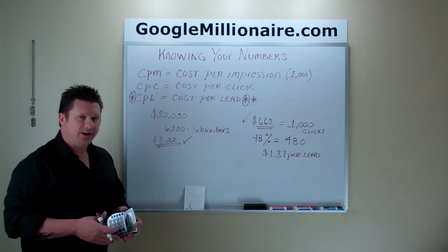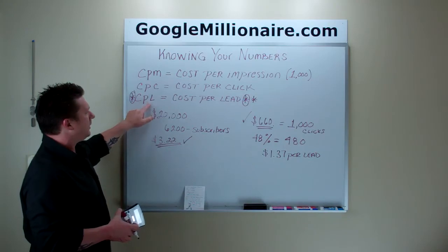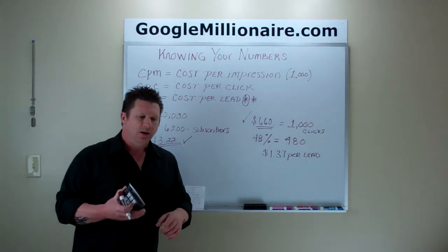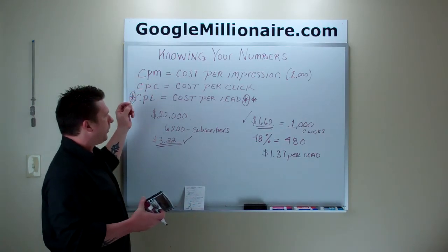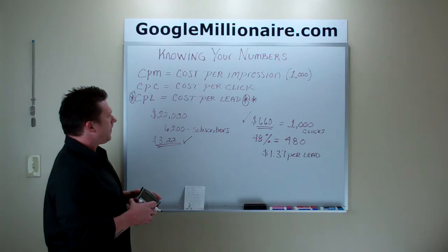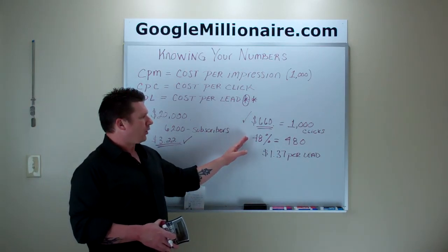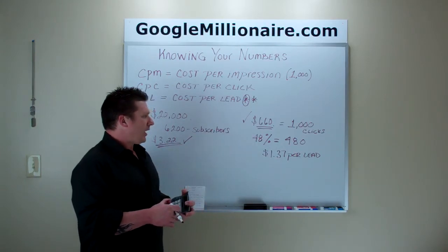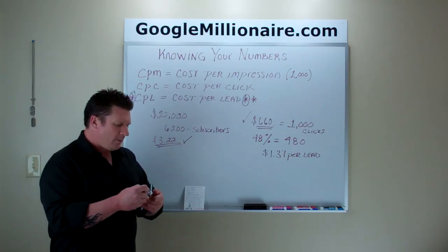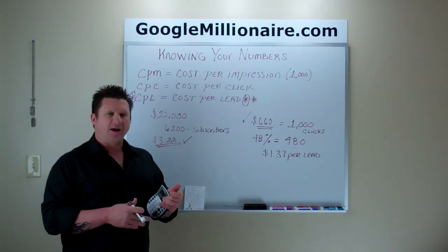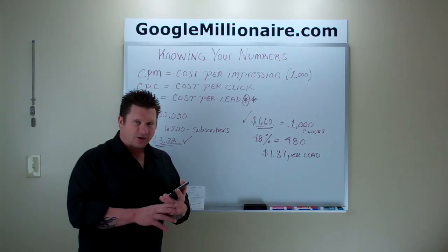And that's how simple it really is — that's knowing your numbers. Focus on cost per lead. After you run a solo ad campaign, a pay-per-click campaign, or a CPM campaign on Facebook, Bing, or wherever, always figure out your cost per lead. Just track that — figure out what you're paying per lead, and that will tell you if that campaign is profitable or not. All right guys, that's it for this training. See you guys in the next class.